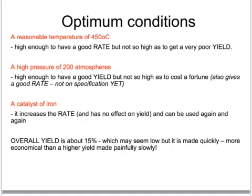Finally, a catalyst of iron is used. It increases the rate of reaction and it has no effects on yield, so therefore it's good to use a catalyst of iron. Overall, a yield of around 14-15% is quite sufficient. It may seem low, but because it's made fast, it's economical.